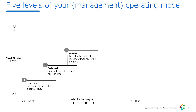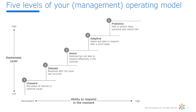The next step is being aware — you've detected the problem, but you still can't respond effectively in the moment. Then adaptive: you're now aware and able to respond after a short delay. And finally, predictive, where you're able to predict likely scenarios and take action to mitigate and reduce the risk.